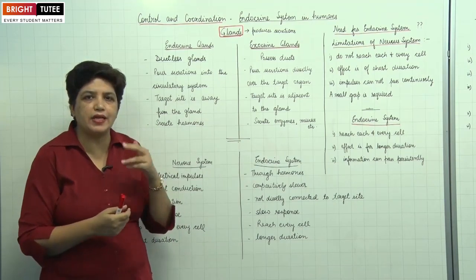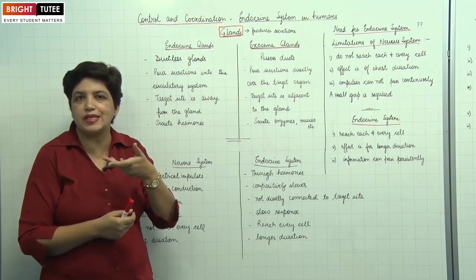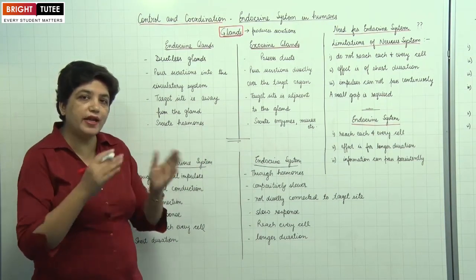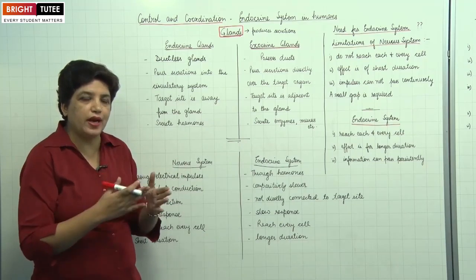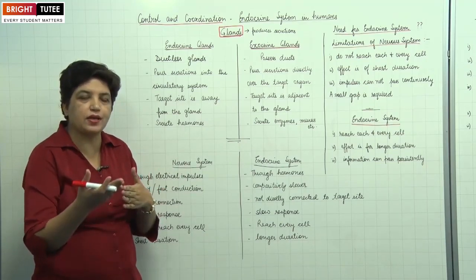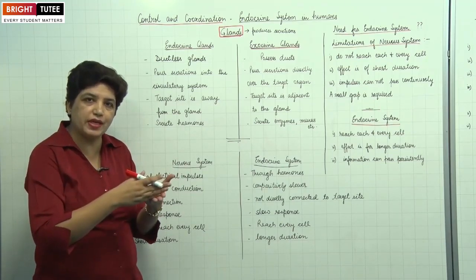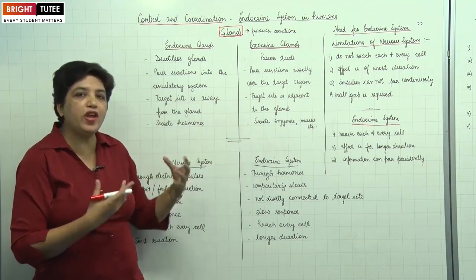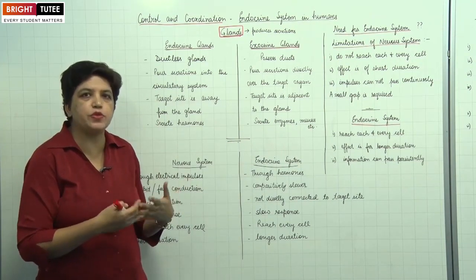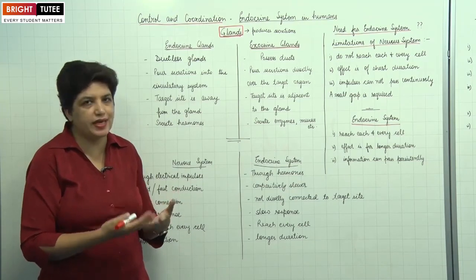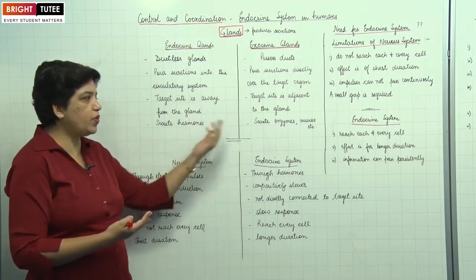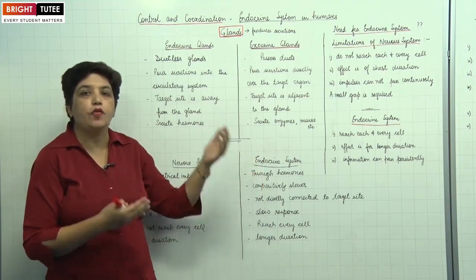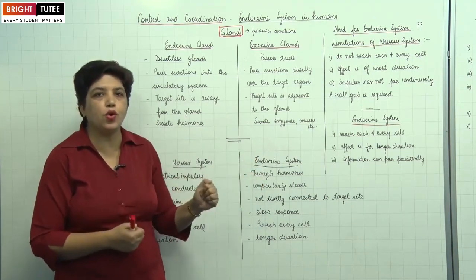The salivary glands secrete saliva into the mouth. These target sites are adjacent to the gland — for example, gastric glands are situated on the stomach itself, and they secrete various chemicals like enzymes or mucus. This is how you can differentiate between endocrine and exocrine glands. For control and coordination, our main concentration will be on the endocrine glands.